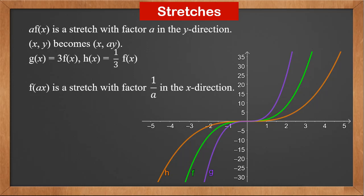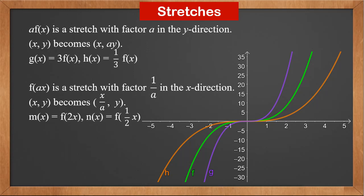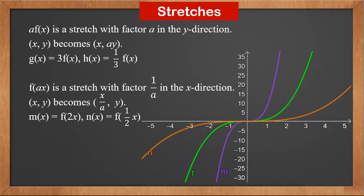f(ax) is a stretch with scale factor 1/a in the x-direction, because every point (x, y) in f(x) becomes (x/a, y) in f(ax). m(x) = f(2x) and n(x) = f(½x). We can see that m is f stretched with factor ½ in the x-direction (compressed with factor 2), and n is f stretched with factor 2 in the x-direction.